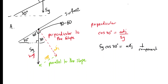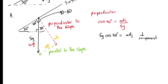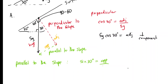We do the same for the component parallel to the slope. Here we're dealing with opposite and hypotenuse, so we should use sine: 5g sin 30° equals the opposite, which is the parallel component. So those are the two answers to part a.